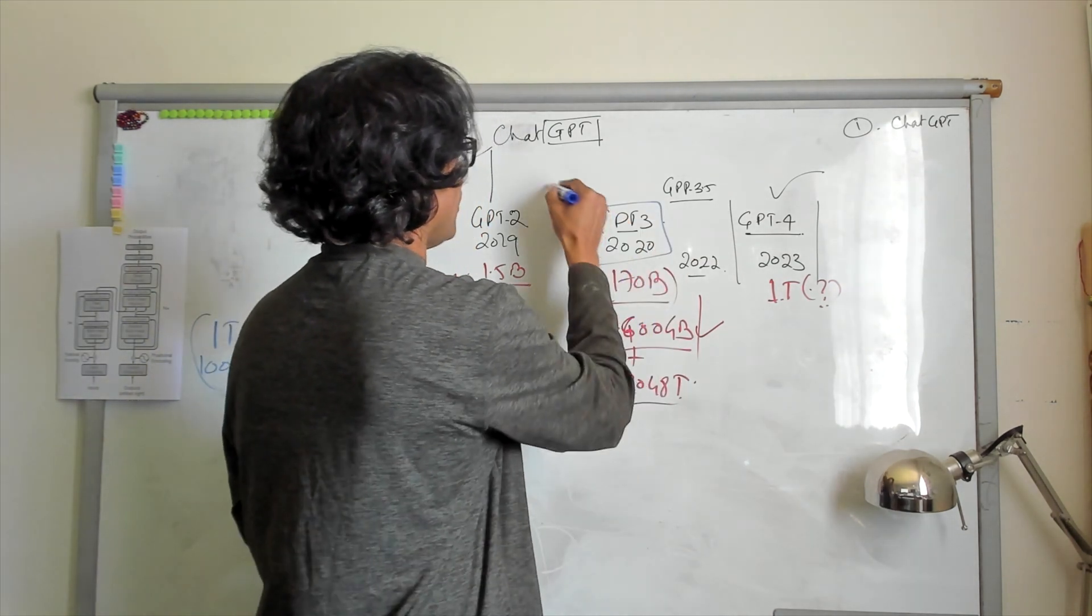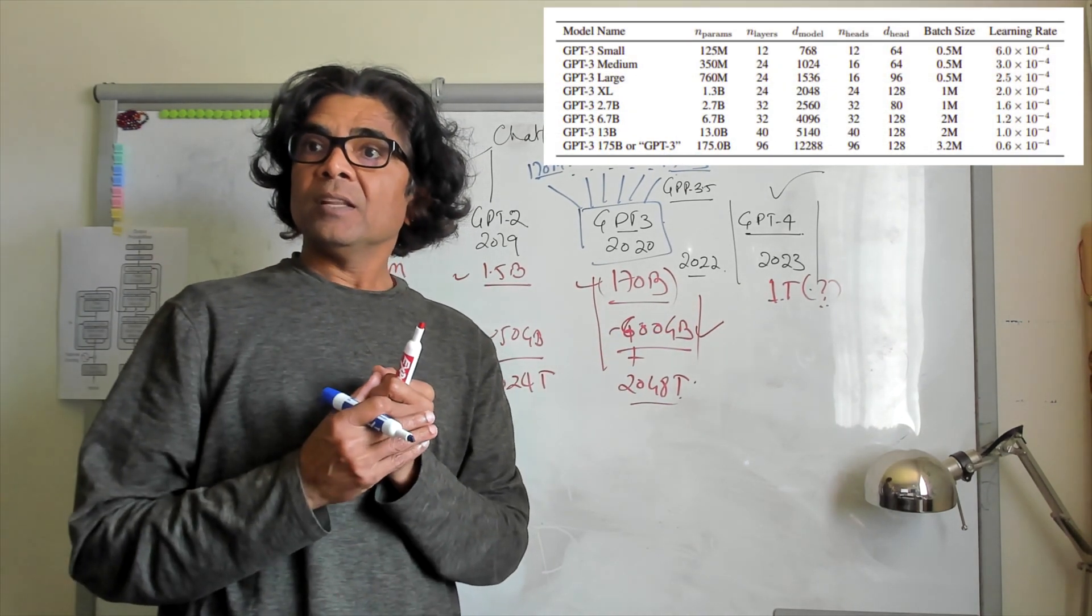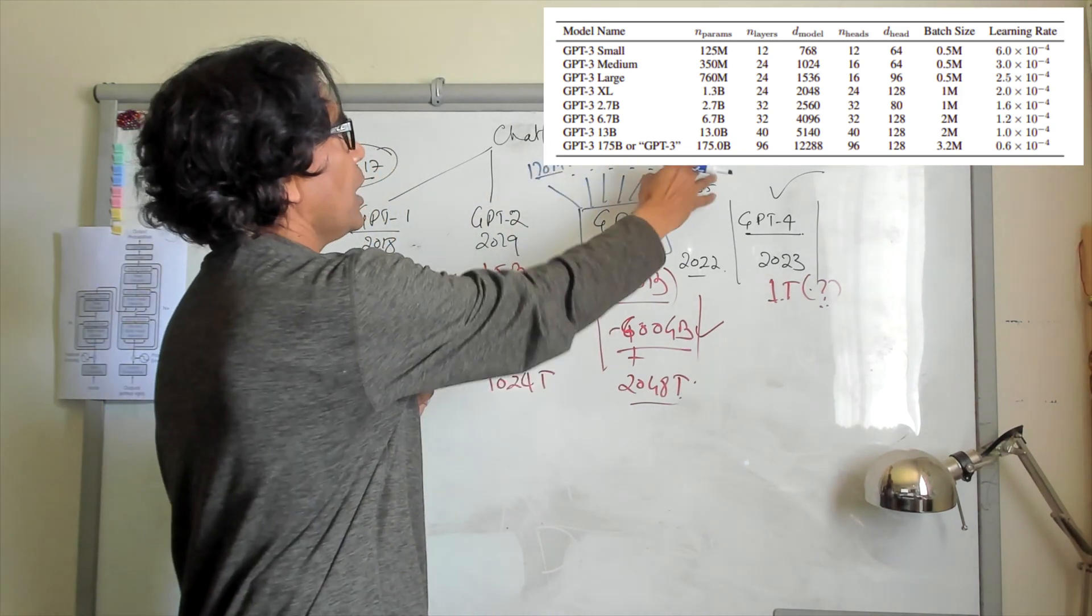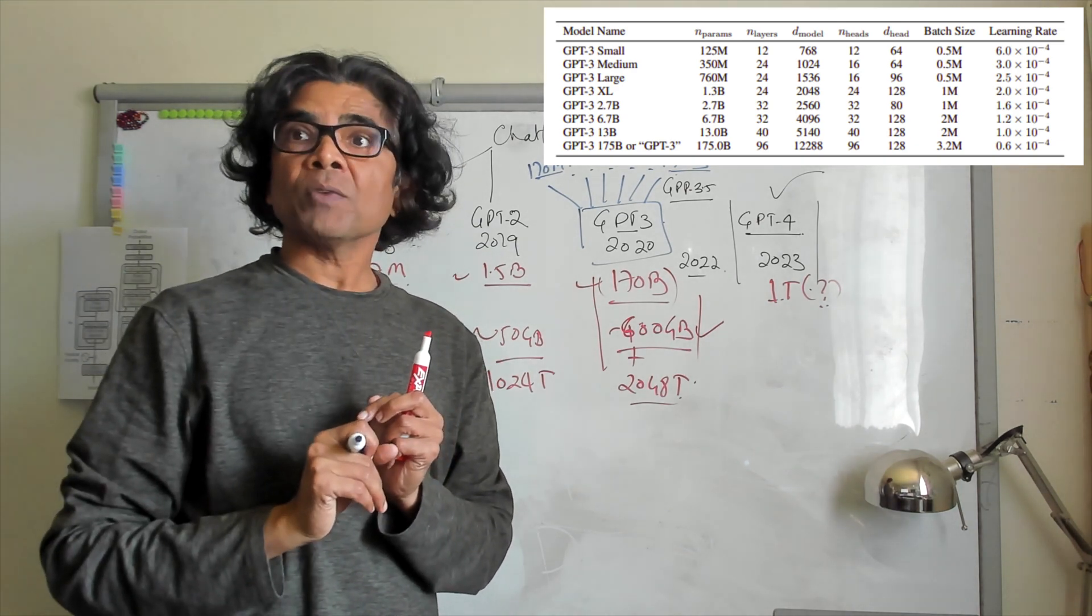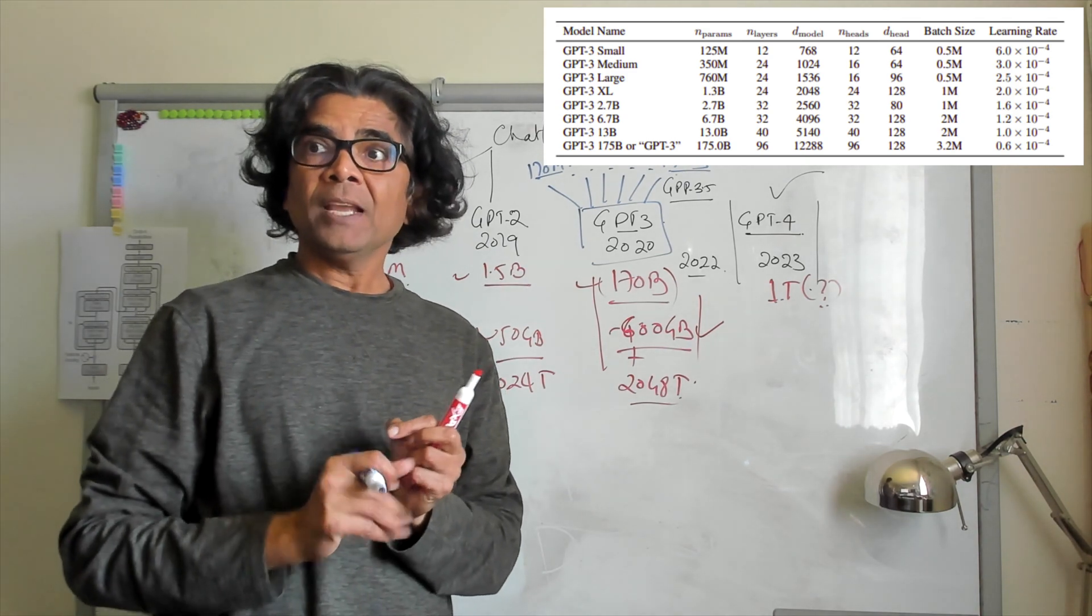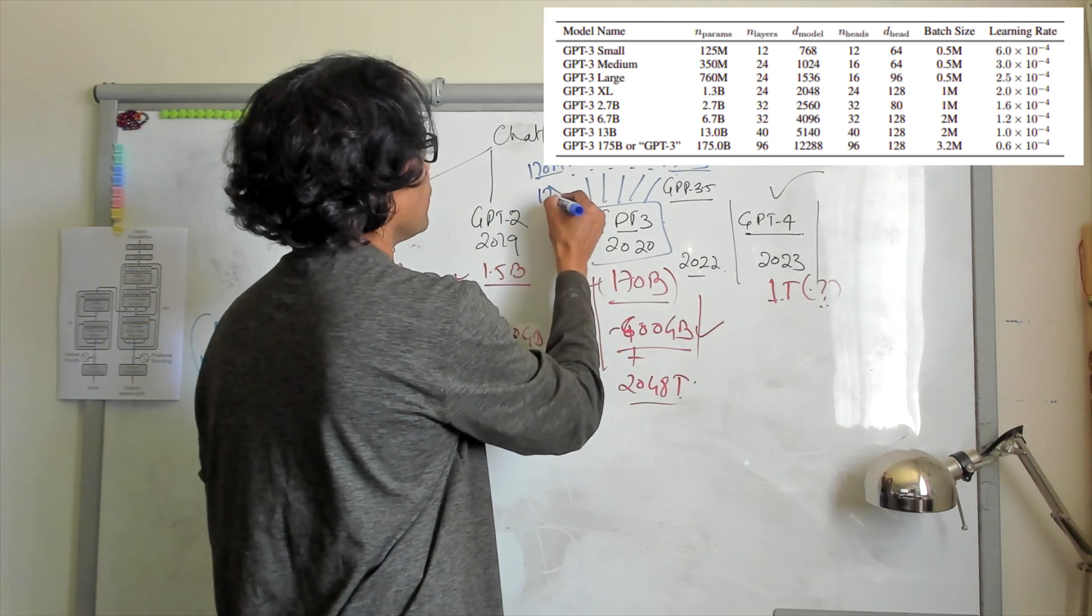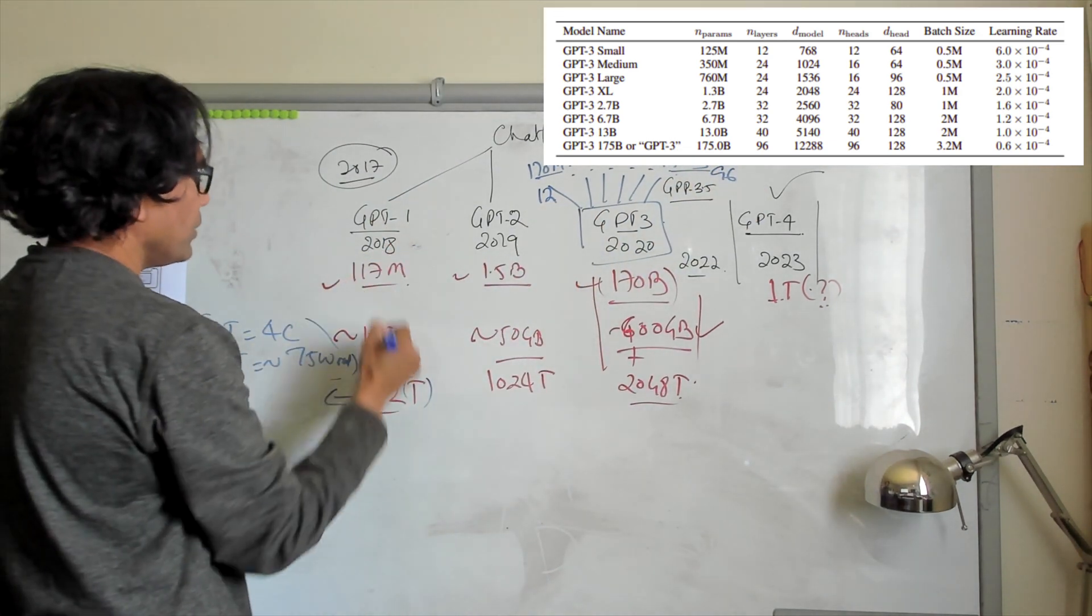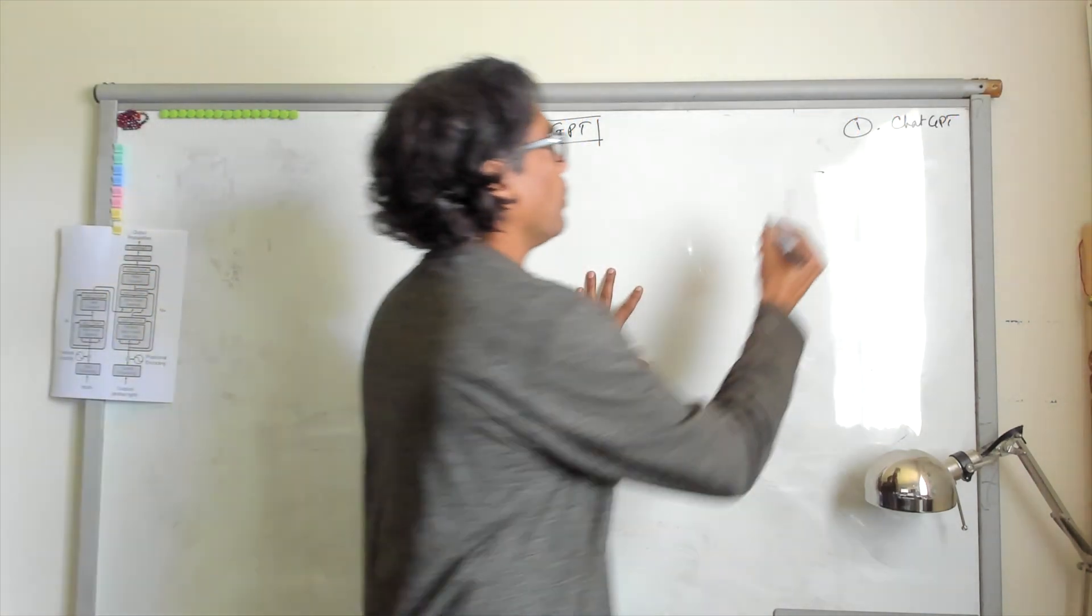So the GPT-3 itself, this model has almost several variations, and the image you are seeing at the screen, you will be able to see that the parameters are from almost 120 million all the way to 170 billion. And you can also see the number of D models, or we call them decoder layers, the total number of decoder layers.